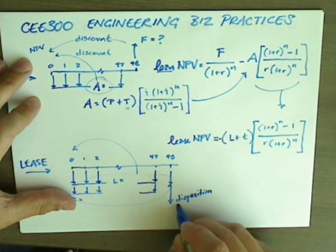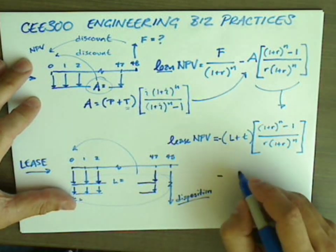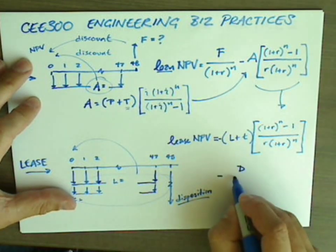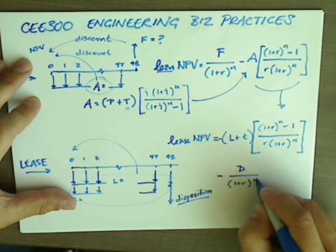And we haven't even looked at the disposition fee. So I suppose we need to also subtract the disposition fee, which we're going to call D, divided by 1 plus R to the N.